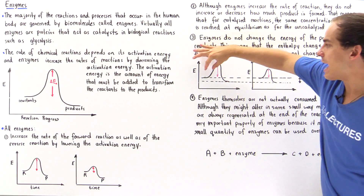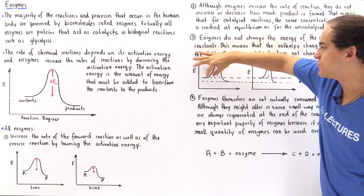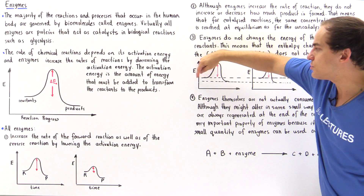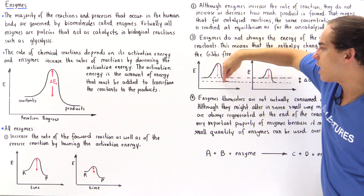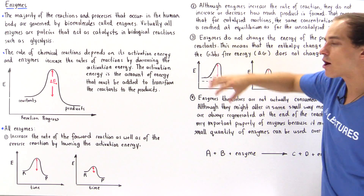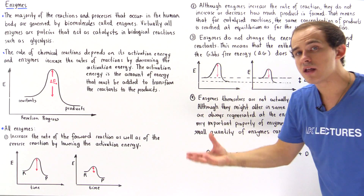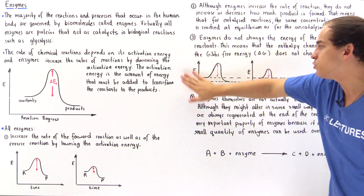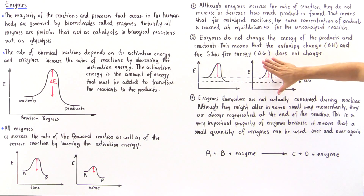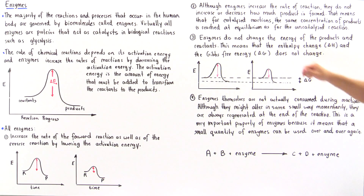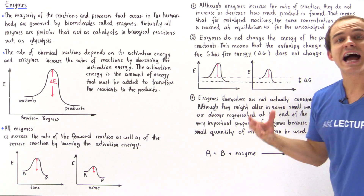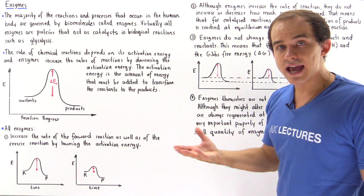We have the reactants and the products. This line is the energy for the reactants, this line is the energy for our products, and this is our uncatalyzed reaction — we do not have the enzyme here. This second graph represents the same reactants and the same products, but now we have that enzyme.